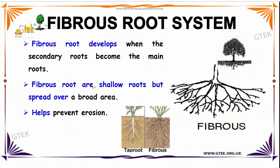Now we are going to see about Fibrous Root System. Fibrous Root develops when the secondary roots become the main root. The fibrous roots are shallow but spread over a broad area. It helps to prevent erosion by gripping the sand tightly. You can see the Fibrous Root and Tap Root over here.